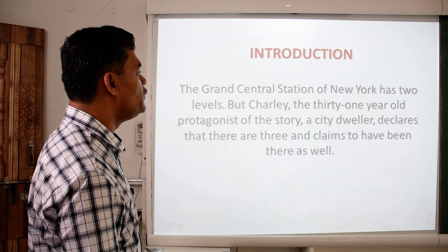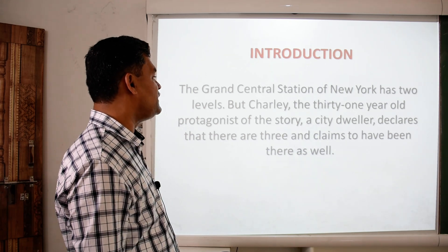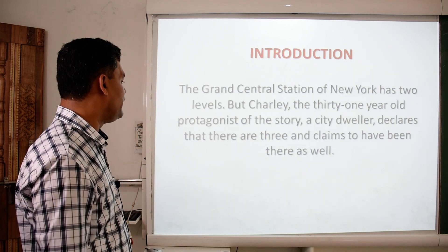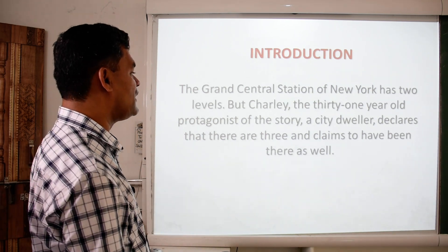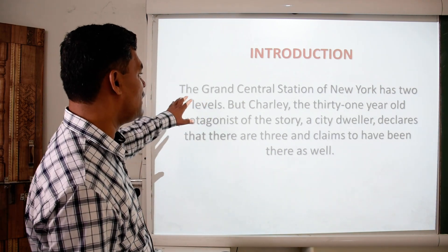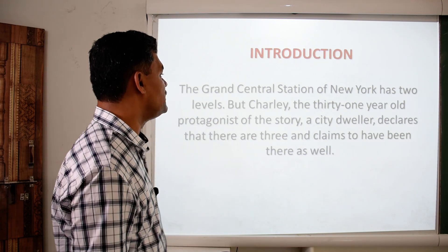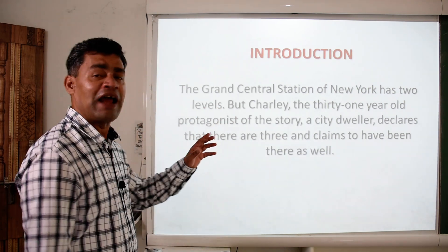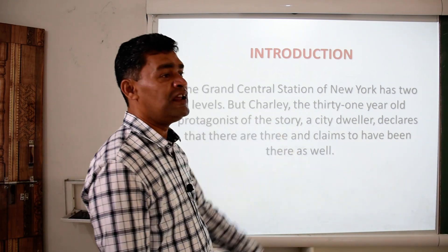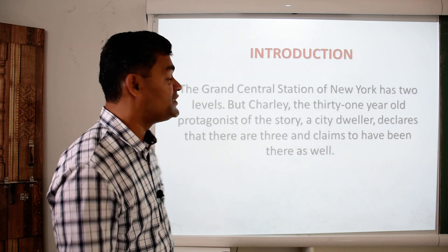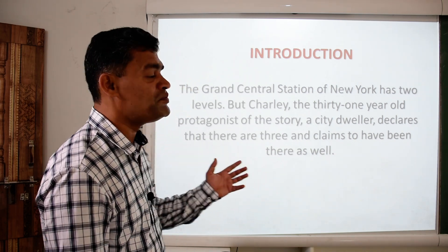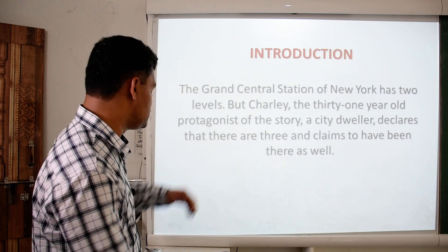The Grand Central Station of New York has two levels. But Charlie, the 31-year-old protagonist of the story — a city dweller — declares that there are three and claims to have been there as well. So there is a station by name the Grand Central Station in New York. It has actually only two levels, but Charlie affirms that he has already discovered the third level and has been to that place.